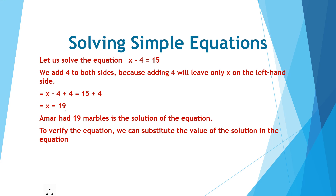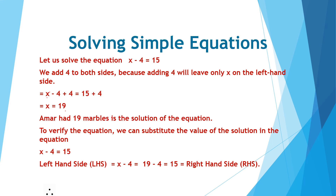To verify the equation, we substitute the value of the solution in the equation. The solution is x equal to 19. Left hand side (LHS) equals x minus 4, so substituting x = 19 gives 19 minus 4 which equals 15. This equals the right hand side (RHS). Therefore left hand side equals right hand side, and the solution is correct.